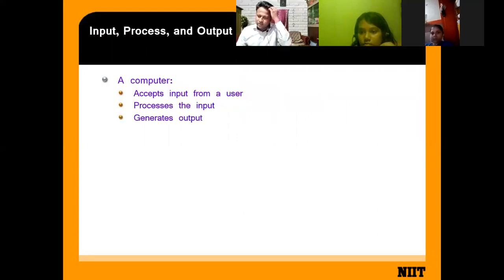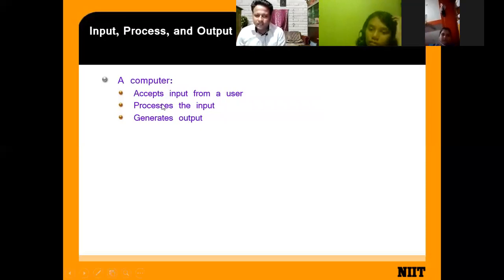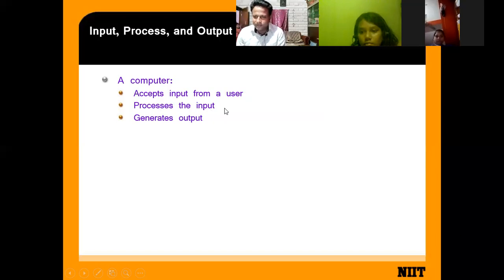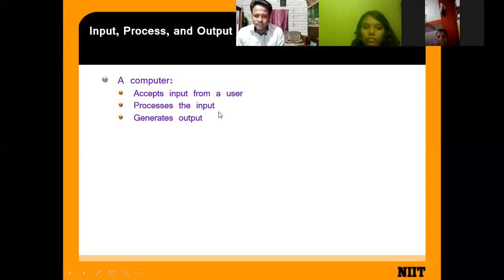A computer accepts the input from a user, processes the input, and generates the output. Your computer works through three phases: it takes the input, it processes the input, and it generates the output.